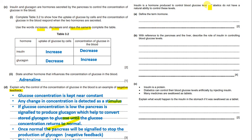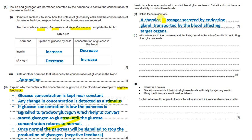Insulin is a hormone produced to control blood glucose levels. Diabetics do not have the natural ability to control this level. Define a hormone: it is a chemical messenger secreted by the endocrine glands, transported by the blood to affect one or two target organs. With reference to the pancreas and liver, describe the role of insulin in controlling blood glucose level.